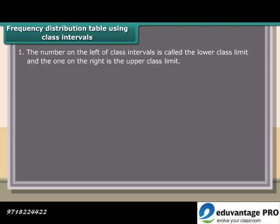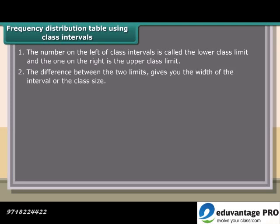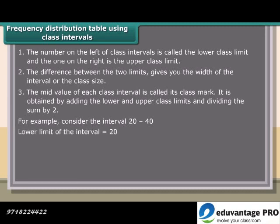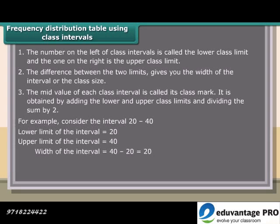The number on the left of class intervals is called the lower class limit, and the one on the right is the upper class limit. The difference between the two limits gives you the width of the interval or the class size. The mid-value of each class interval is called its class mark. It is obtained by adding the lower and upper class limits and dividing the sum by 2. For example, consider the interval: Lower limit of the interval is equal to 20. Upper limit of the interval is 40. Width of the interval is equal to 40 minus 20, which equals 20. Class mark is equal to 20 plus 40 upon 2, which is equal to 60 upon 2, which equals 30.